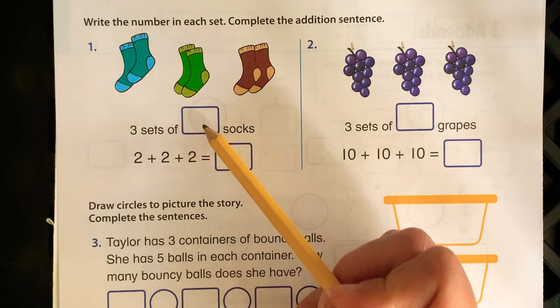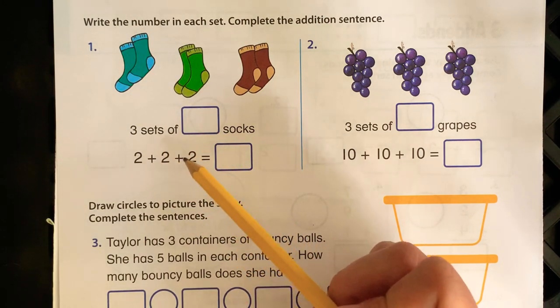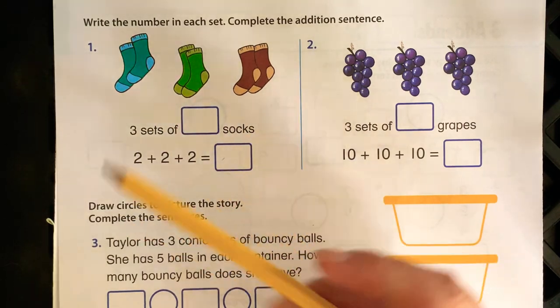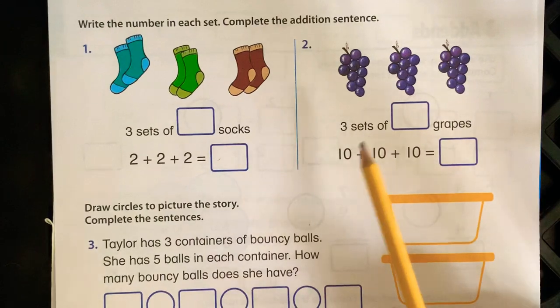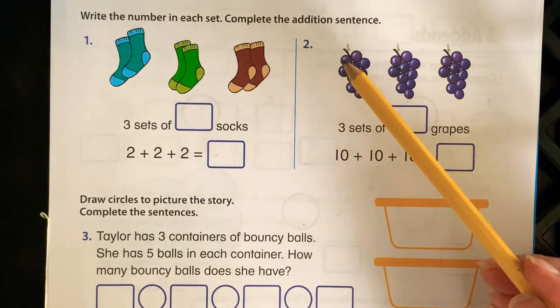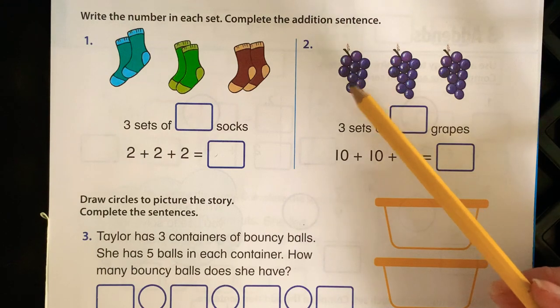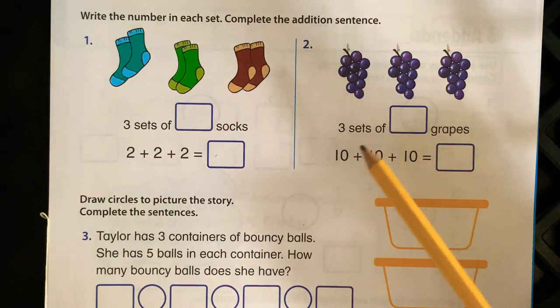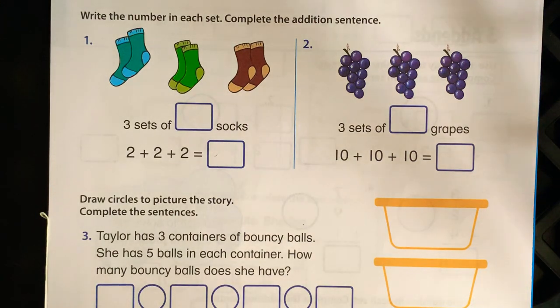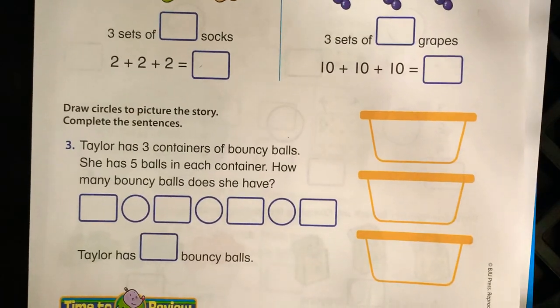That number is going there. And then two plus two plus two equals - you're going to put that answer there. Same thing for here. There's three sets of grapes. How many grapes are in each set? Count them, write the answer in, and then do ten plus ten plus ten equals blank.